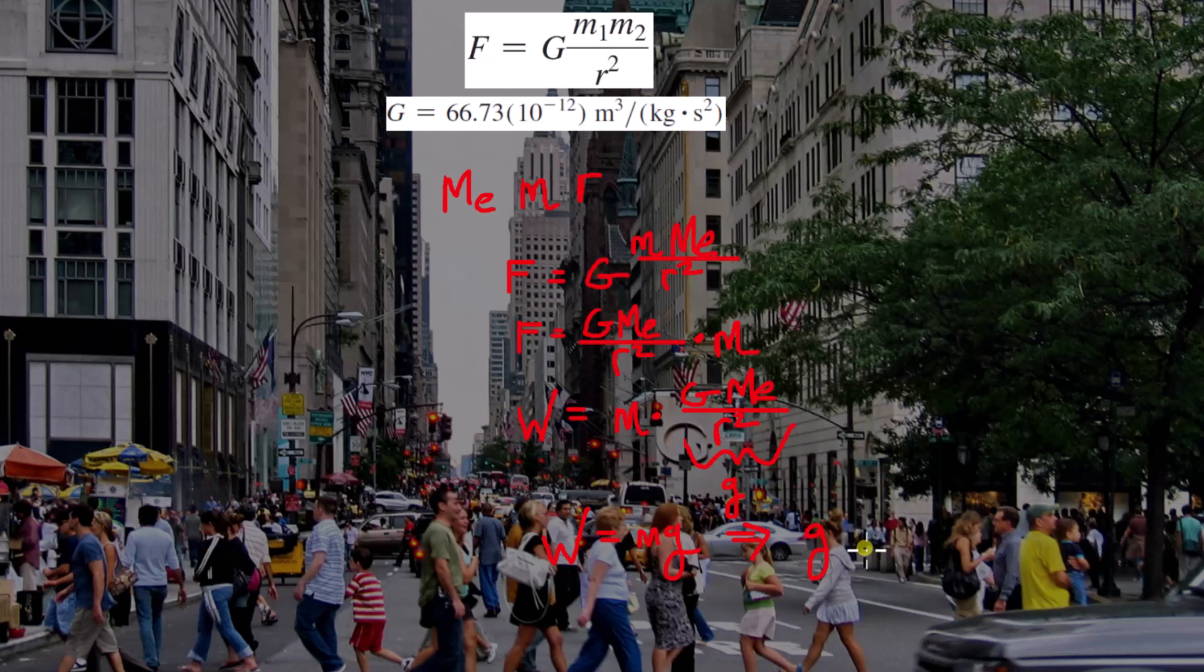So, the acceleration due to gravity that an object on the Earth feels due to the Earth's gravitational pull is constant for all objects. Assuming we're all at the same distance, so we're all in the same room, let's say. G is constant.